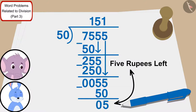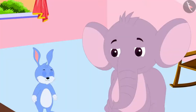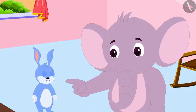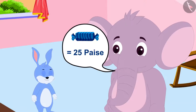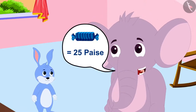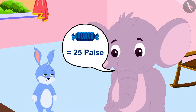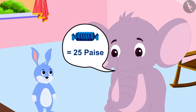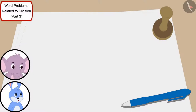"We can buy toffees for young children with these 5 rupees," Bunny told Appu. "Yes Bunny — a toffee is worth 25 paise, so now tell me, how many children will we be able to give toffees to?" Appu asked Bunny.